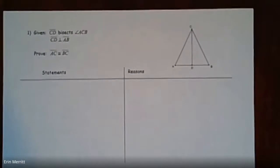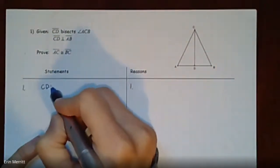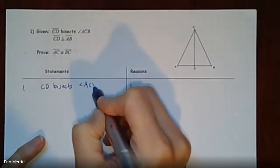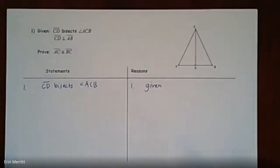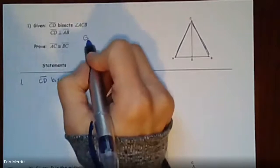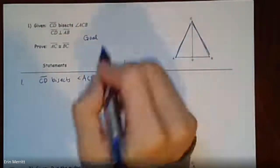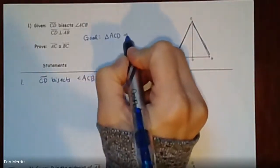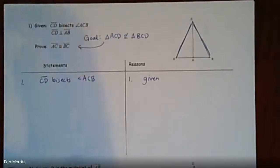Moving to the next proof: CD bisects angle ACB. Before diving in, always check what you're trying to prove — here it's that AC is congruent to BC. Those segments are not a given; that's how we finish the proof. Think about which triangles contain those segments. Our goal is to prove triangle ACD is congruent to triangle BCD, and then we can use CPCTC to finish.